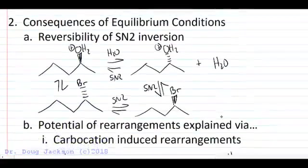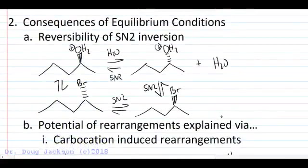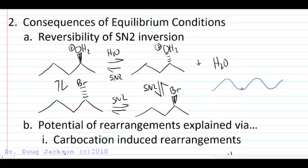Consequences of our equilibrium conditions, the reversibility of that SN2 inversion that we saw from above, just another way of thinking about how that inversion may occur through sequential SN2 reactions. When we have equilibrium conditions, barriers don't mean very much in a reaction pathway. So we can hop those barriers and get into different energy wells that are similar in energy.